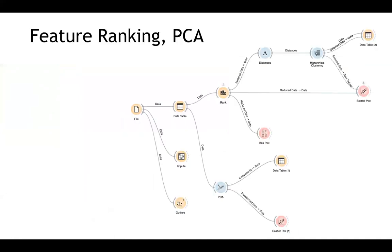The first example I will show today is feature ranking by rank methods and also by PCA. Feature ranking is a very popular task in both the scientific and engineering communities. Let's go to the Orange interface and I'll show how to draw this workflow.